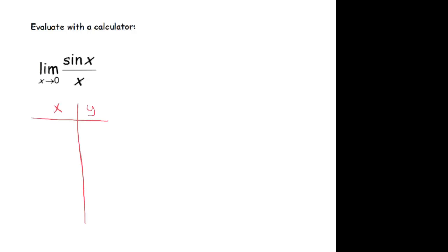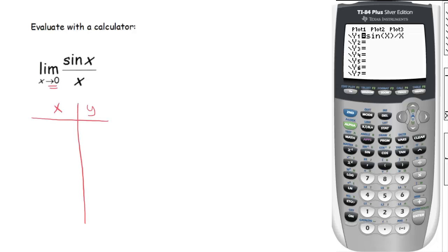I'm going to use my calculator to fill out the values of this table that would help me answer this question: What is the limit as x goes to zero of sine of x over x? Before we do that, maybe we want to take a look at what the picture looks like, just to be sure.